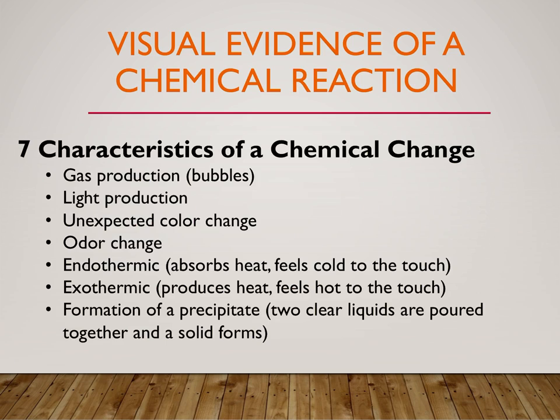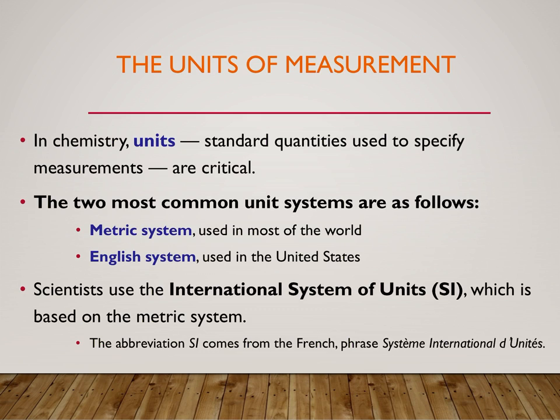The last characteristic is formation of a precipitate — we'll deal with this a lot when we talk about solubility. Formation of a precipitate occurs when you have two clear liquids — by clear, I mean you can see through them, not that they're just like water. When you pour two liquids together and a solid forms, or they get really cloudy, that would be formation of a precipitate. A solid has formed from two liquids, and that's indicative of a chemical change — something has been produced from that reaction.